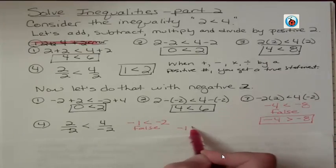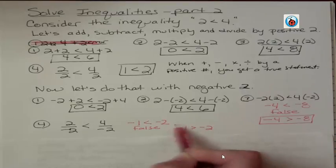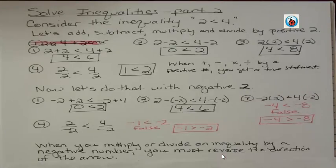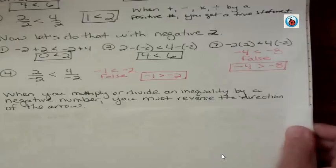Negative 1 is actually greater than negative 2. Okay, so here's what you've got to do. When you multiply or divide an inequality by a negative number, you must reverse the direction of the arrow. Not for addition and subtraction, not for positive numbers, just when you multiply or divide with a negative number. You have to change the direction, or else you're going to get a false statement.